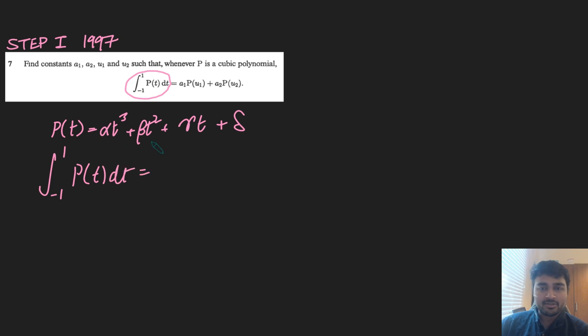And now you can do this yourself, but notice that alpha t cubed and gamma t, those are both odd functions. So when I sketch them, they're symmetric around the origin, or they're rotationally symmetric by 180 degrees about the origin. So for example, t cubed looks like this. Not drawn perfectly, but it looks something like that, and so when I integrate from minus 1 to 1, this negative area is the same as that area, and so they cancel out.